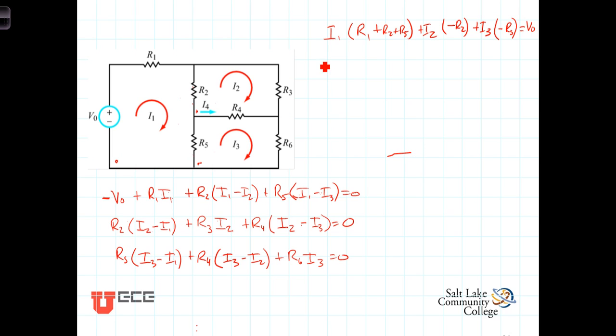Combining like terms in the second equation, we factor out the I1, and I've got one I1 term with a negative on it, so it'll be negative R2. Plus I2 times R2 plus R3 plus R4. And then our I3 terms—there is only one with a negative, so it'll be negative R4. And the sum of those terms equals zero.